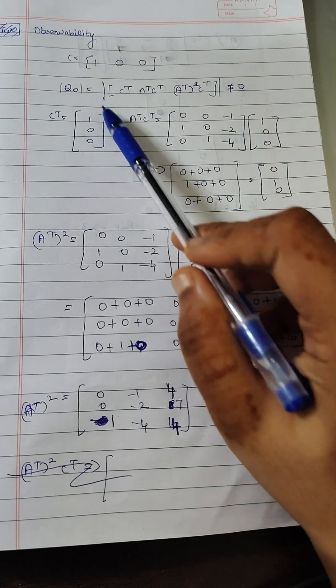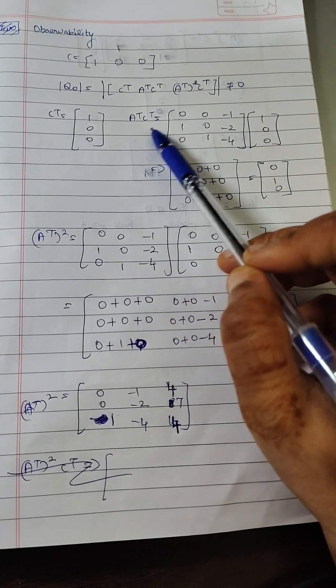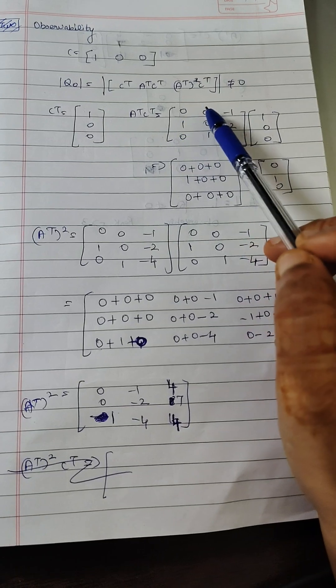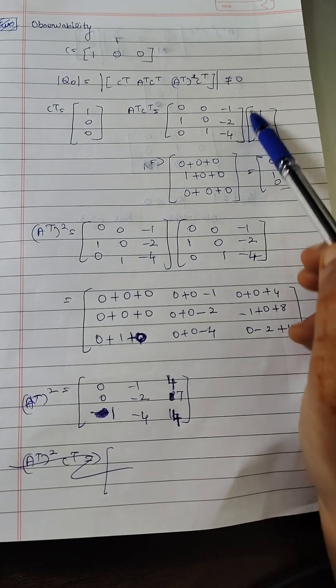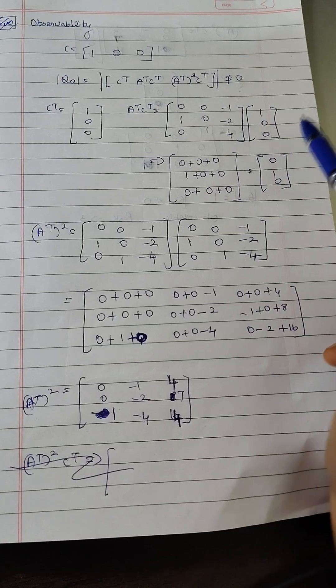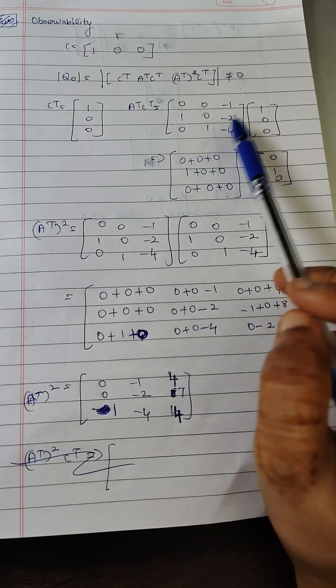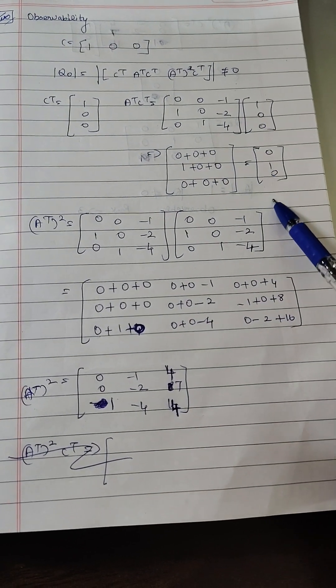So let us check what is c transpose 1 0 0 and what is a transpose c transpose? a transpose is 0 0 minus 1, 1 0 minus 2, and 0 1 minus 4. c transpose is 1 0 0. So while calculating and multiplying these two we are getting the value as 0 1 and 0.